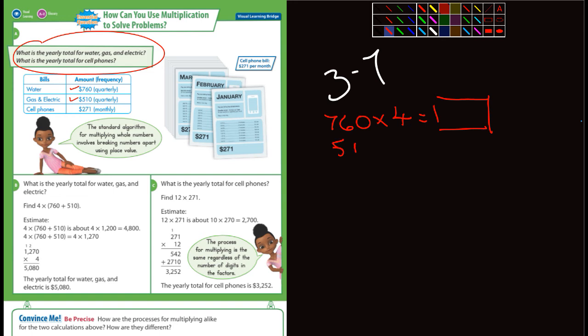Those two amounts added together would be the total amount for the year for water, gas, and electric. The other one is the cell phone. It says monthly, and there's 12 months in a year, so that'd be 271 times 12, and that would get you the year total.